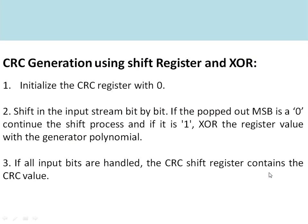CRC can also be generated using a shift register — this is commonly done by hardware implementation using a shift register and XOR gates. First, load the CRC register (8-bit register) with zeros. Then shift the input data bit by bit into the CRC register. If the popped-out MSB of the CRC register is zero, continue the shifting operation. If the popped-out MSB is one, perform XOR between the register value and the generator polynomial. When all input bits are shifted, the final CRC shift register contains the actual CRC value to be transmitted.